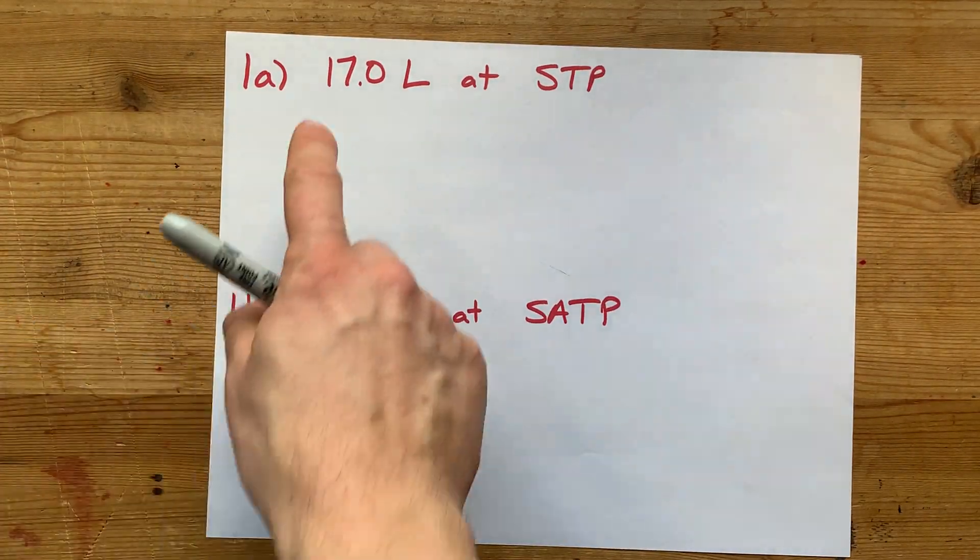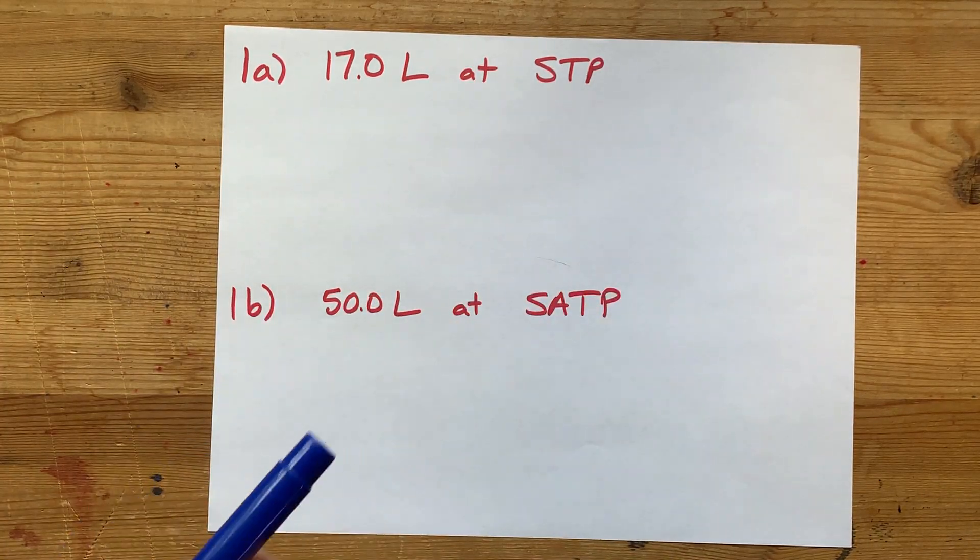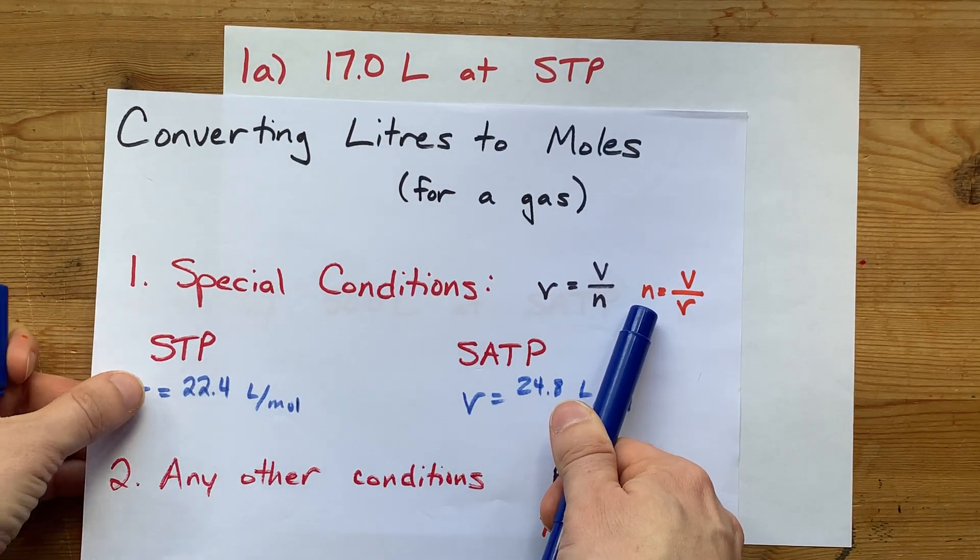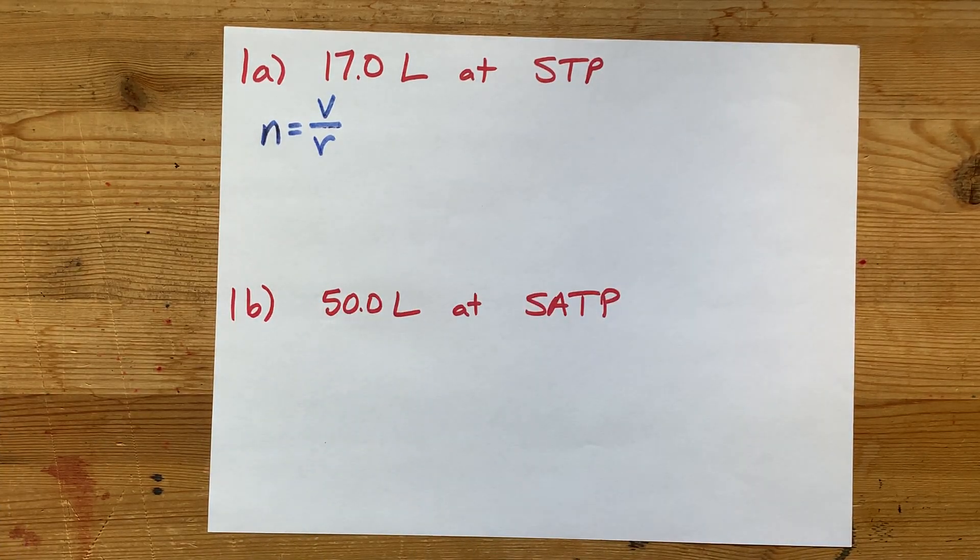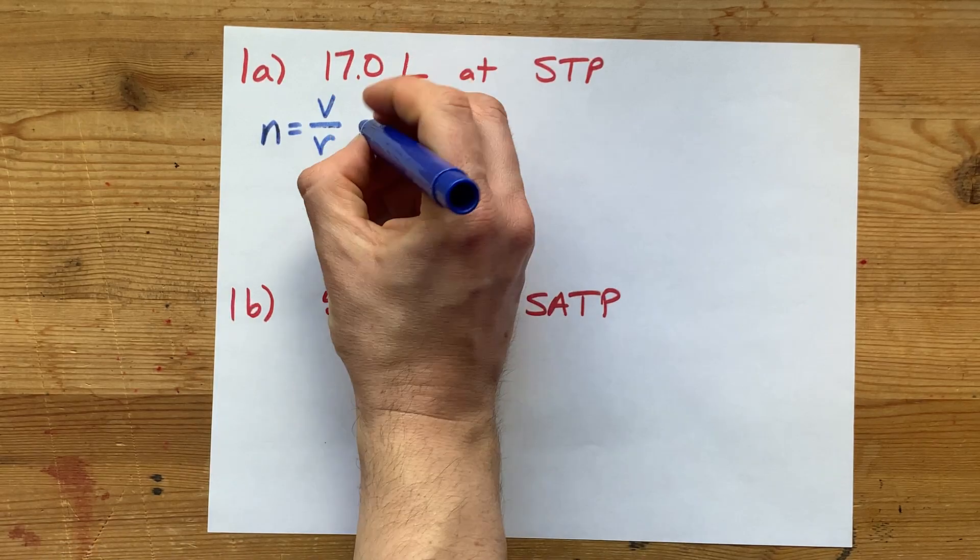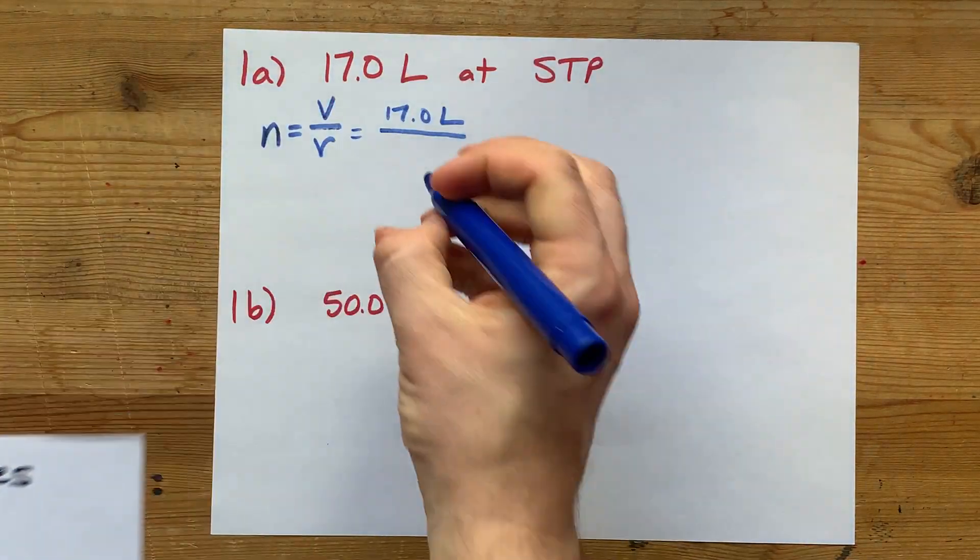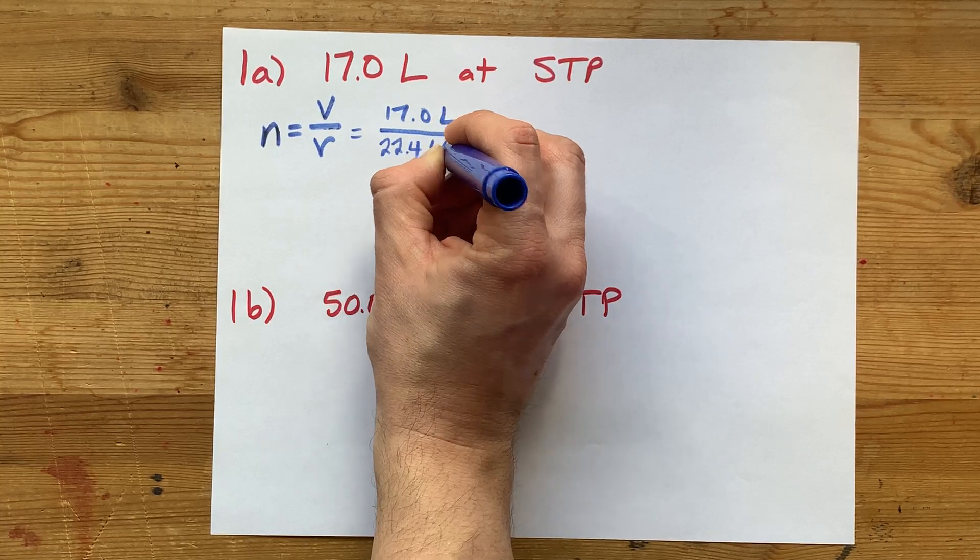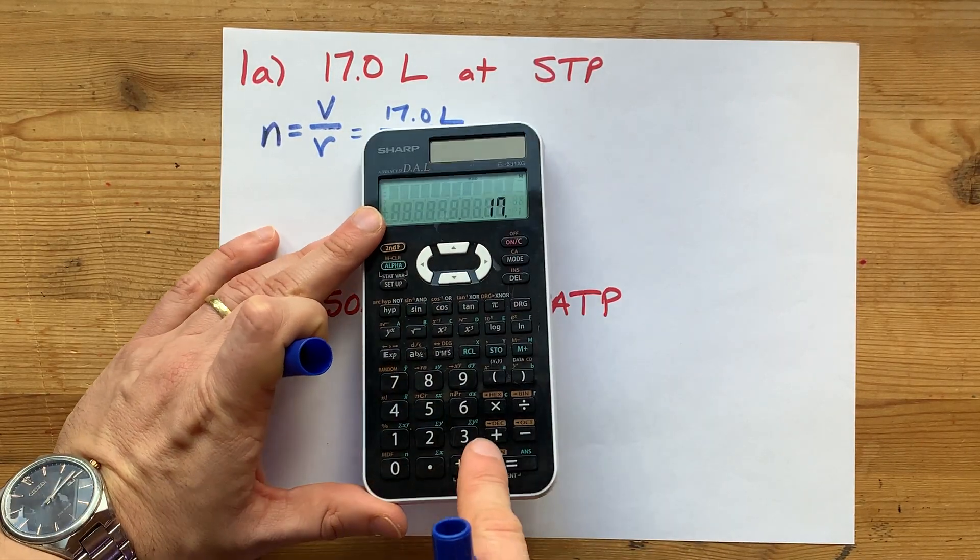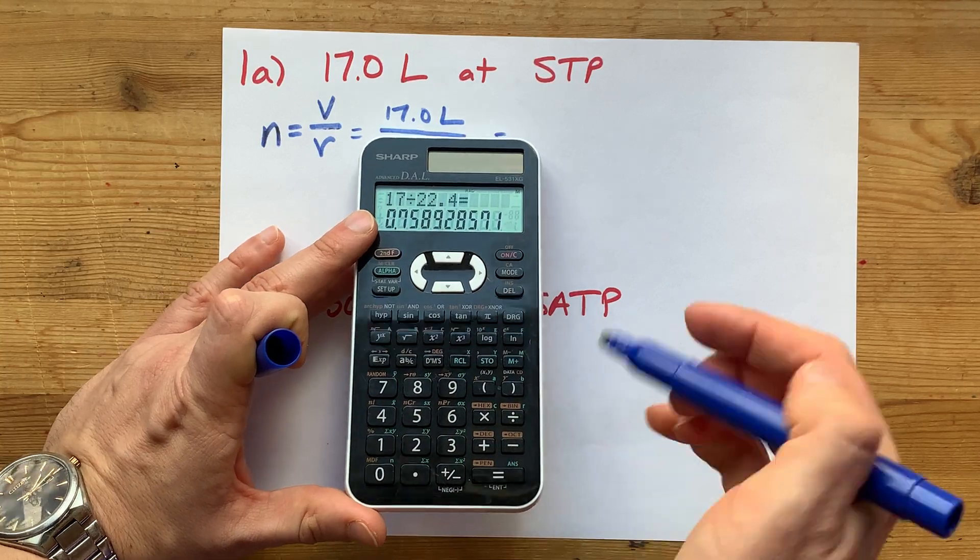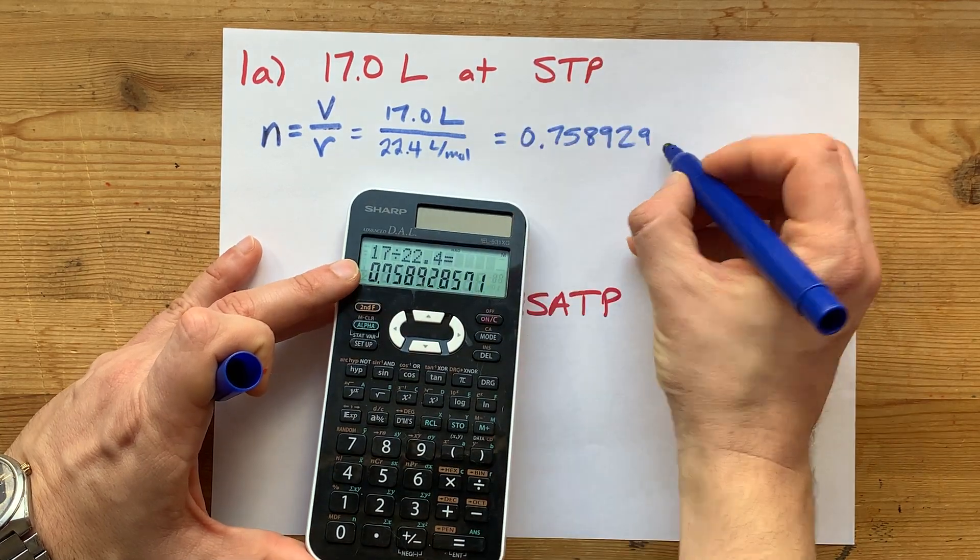Let's convert 17 liters at STP to moles. That's a special condition, so n = V/v. The volume is 17.0 liters, divided by the molar volume at STP, 22.4 liters per mole. Using a calculator: 17 divided by 22.4 equals 0.758929, liters cancel.